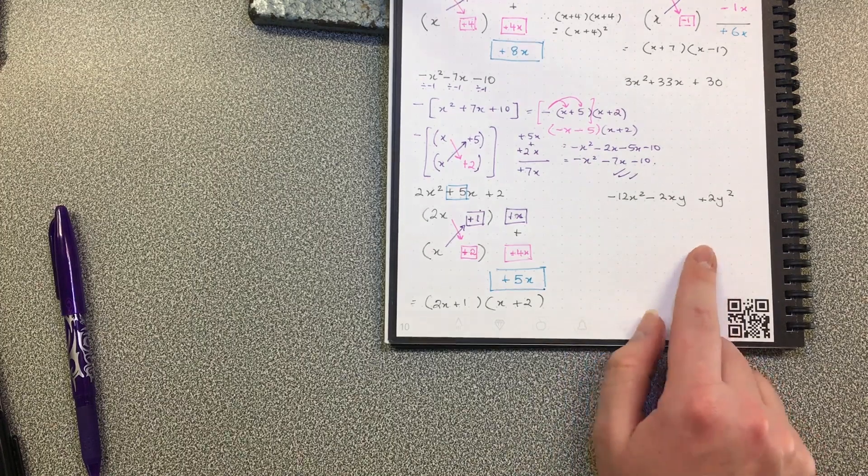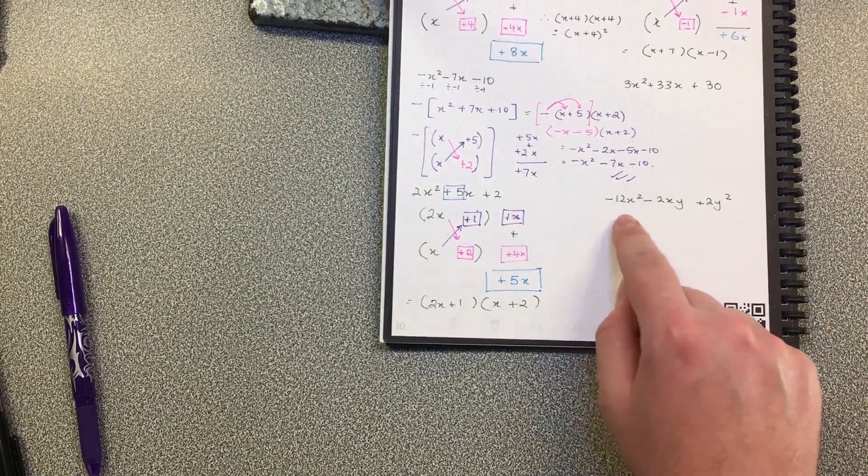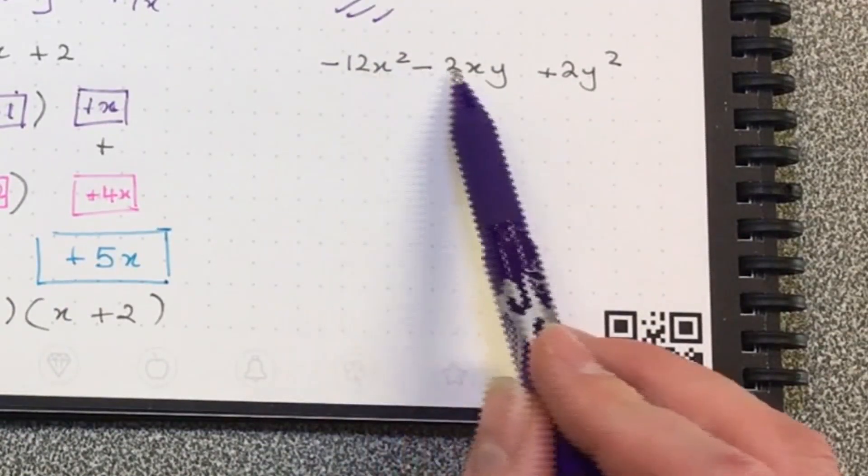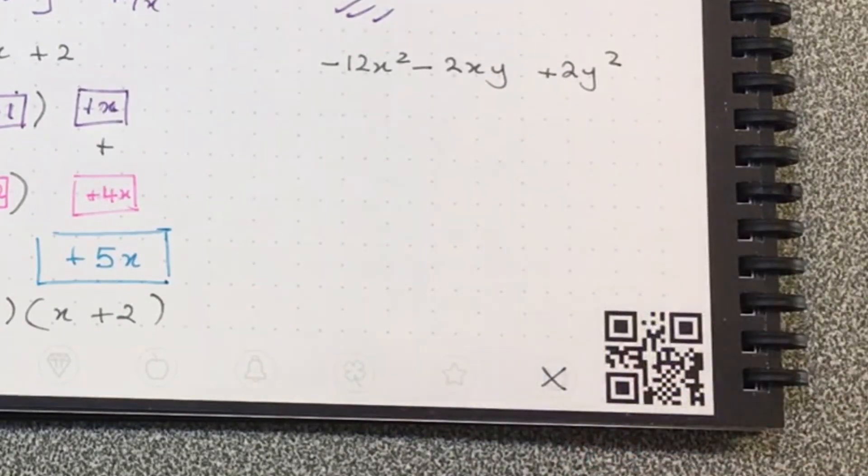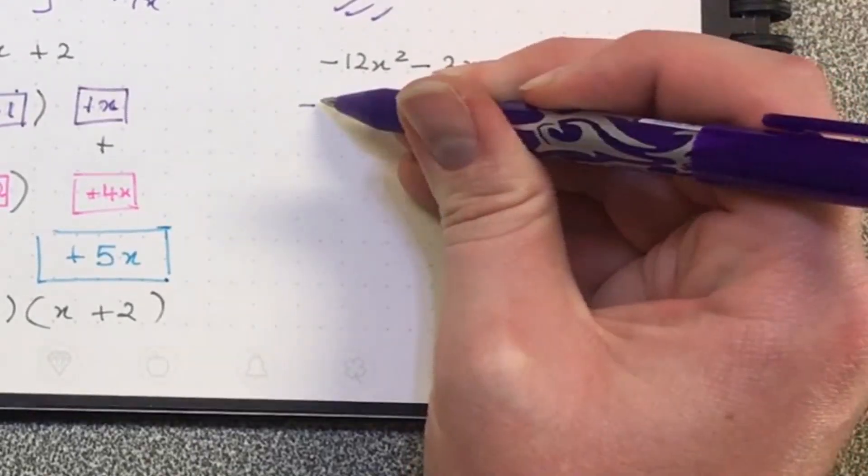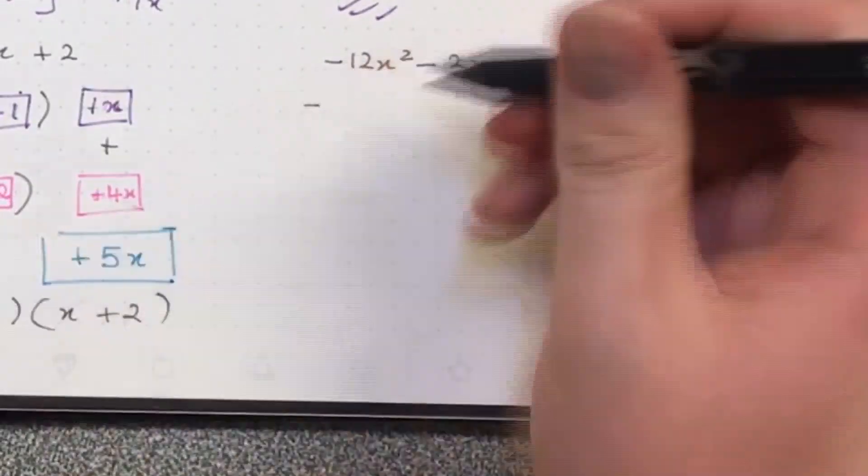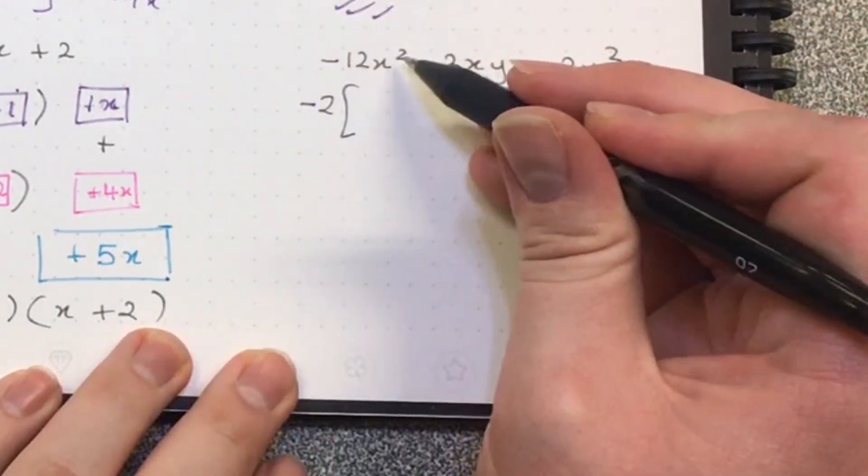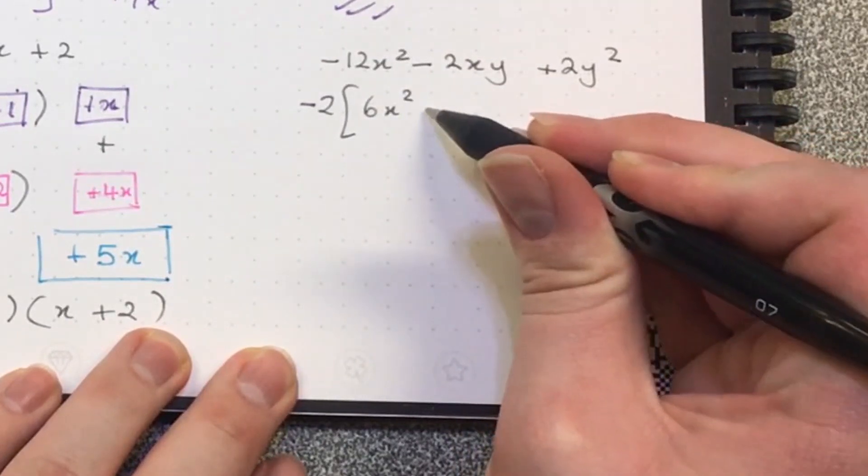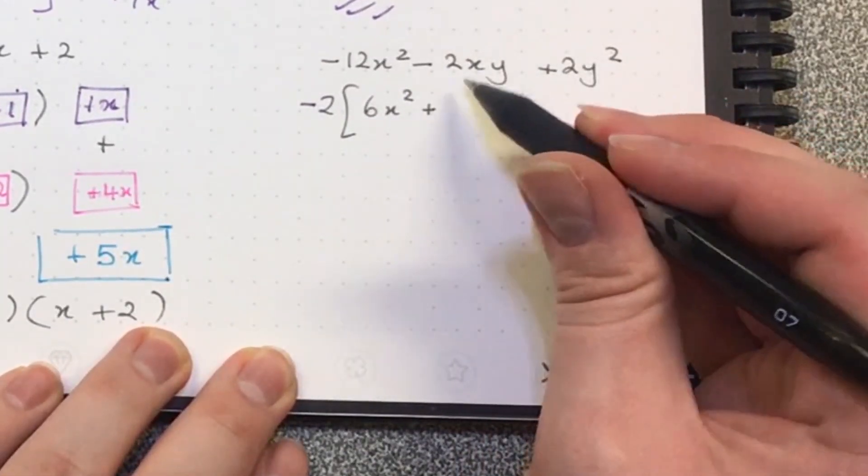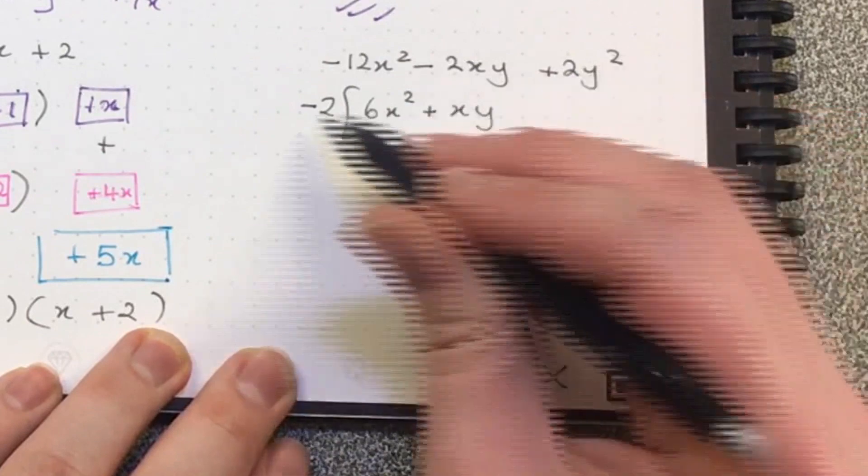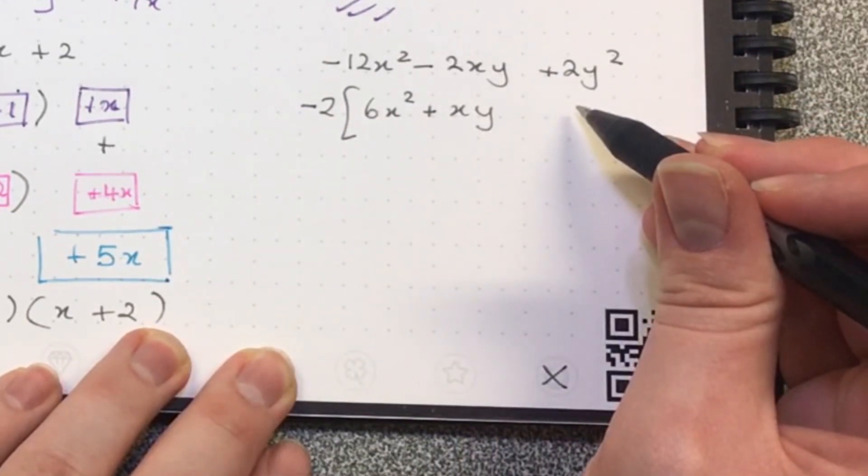Now in the one on the right, first of all I would take a common factor out. What's a number or letter that is in every single one of these terms? I'd probably take the minus out because we like to be more positive. I'm going to take a minus two out. Negative 12x squared divided by negative two is 6x squared. Negative 2xy divided by negative two would be positive xy. Positive 2y squared divided by negative two is negative y squared.